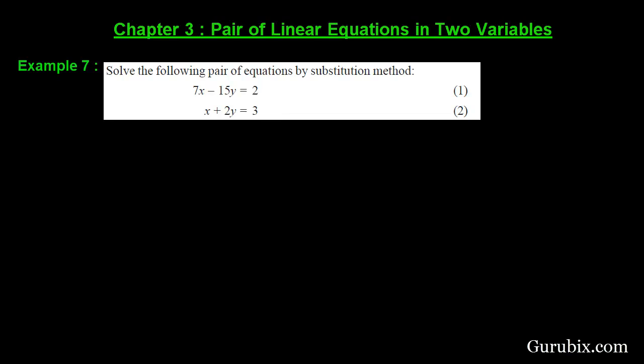Here are the two linear equations in two variables. The first equation is 7x - 15y = 2 and the second equation is x + 2y = 3. We have to solve this system of equations for x and y. So let us see how to solve.